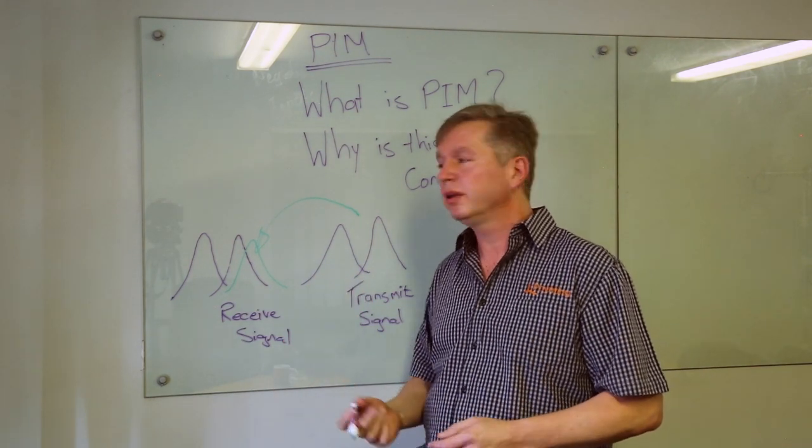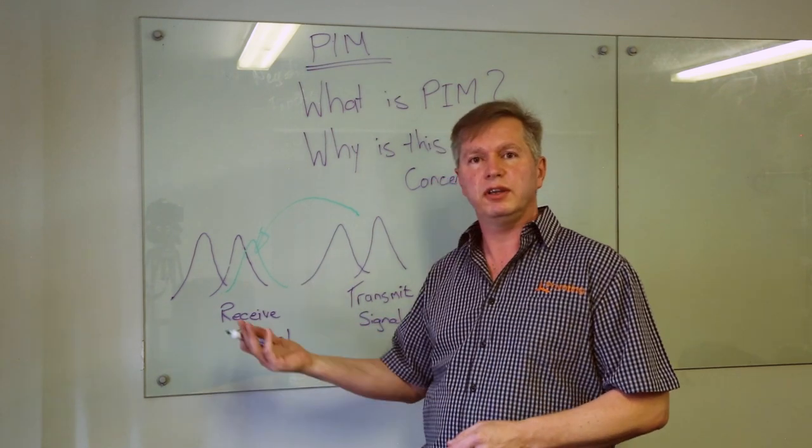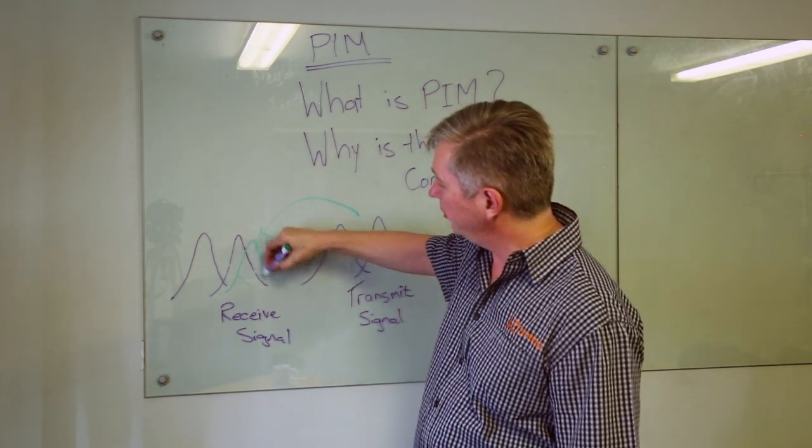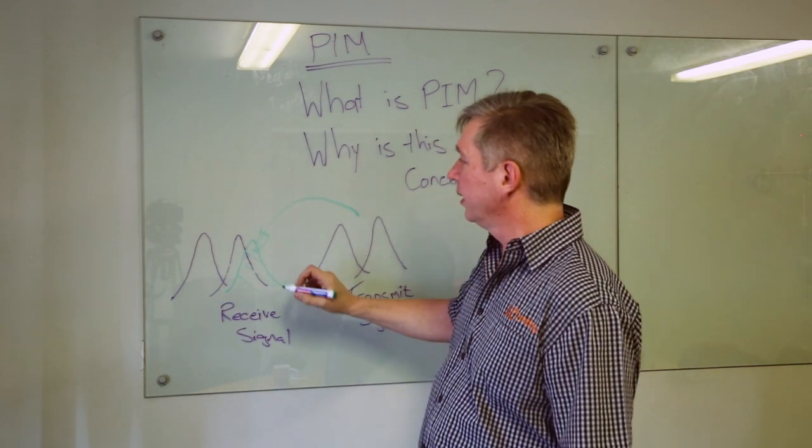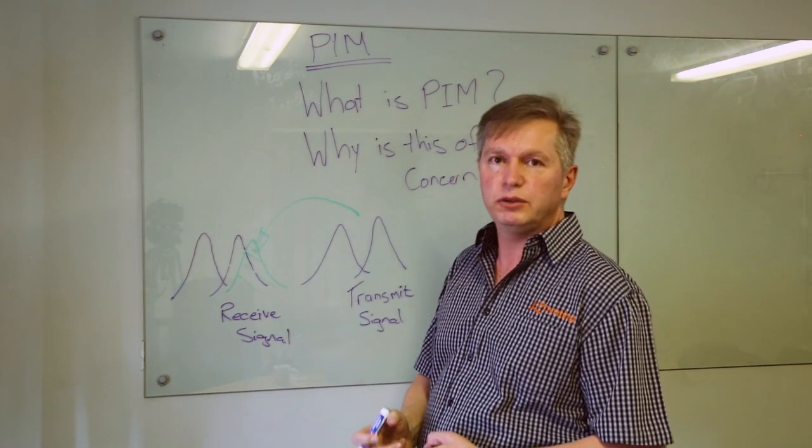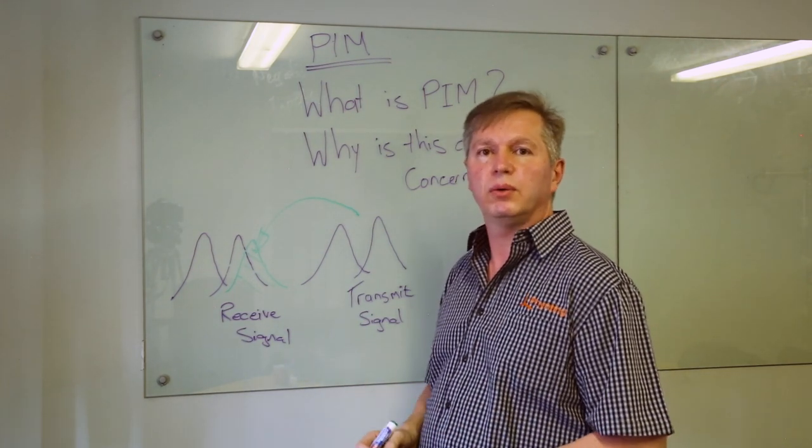If it was a cell phone network, it would have been the cell phone user at the other end. This floods your input stage of the receiver and drastically reduces the quality, throughput and speech quality of your call.